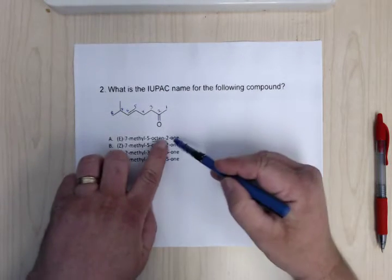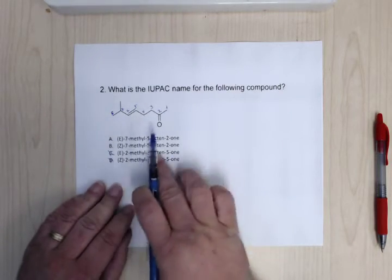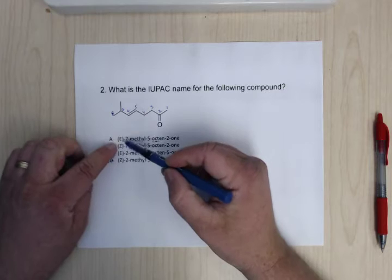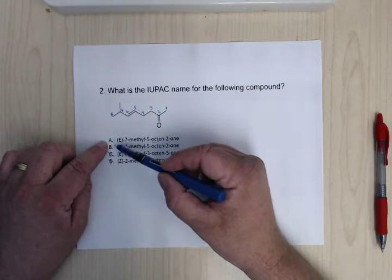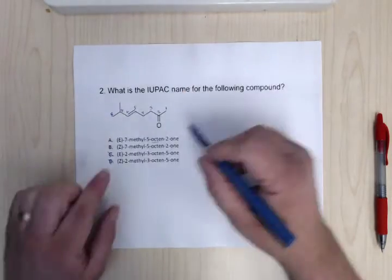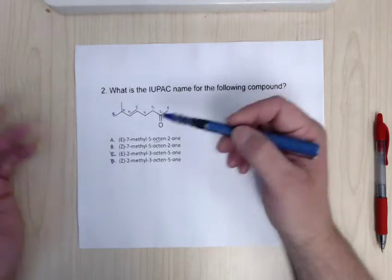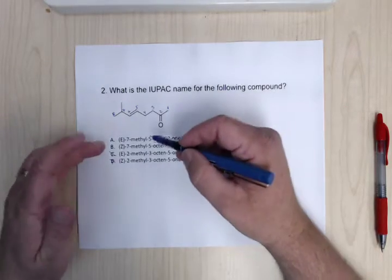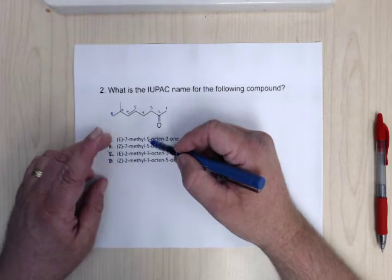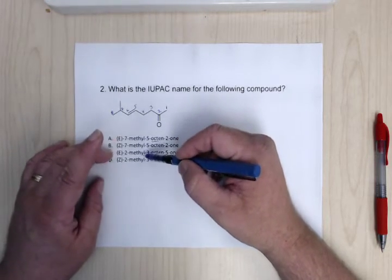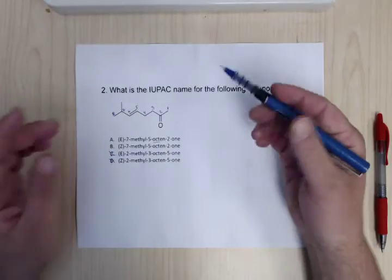So the ketone is at position two — we can knock out the two answers that don't have that. Even if you don't remember E and Z, you're already down to two choices. And if you knew how to do E and Z, you could narrow it down further — if it's Z, you're looking at just these two, and you've eliminated the others.